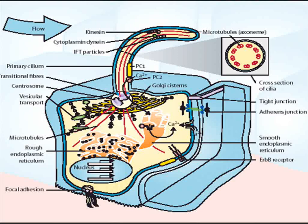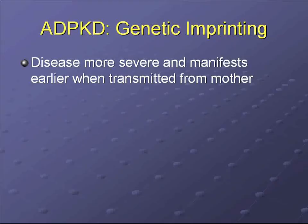This picture shows where these proteins are thought to occur within a tubular epithelial cell. There is a primary cilium projecting into the tubular lumen, and these proteins are thought to be present in this structure and may be responsible for cellular orientation.